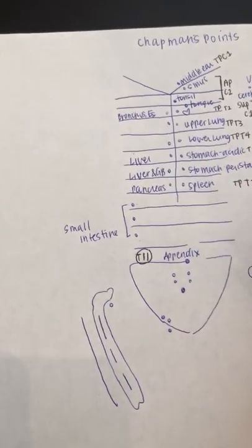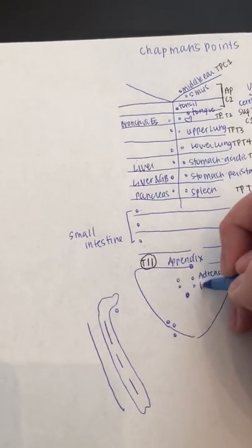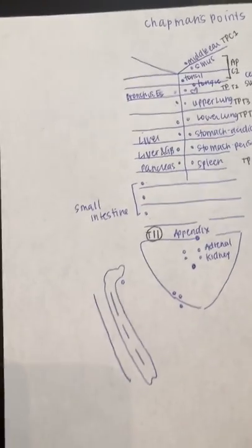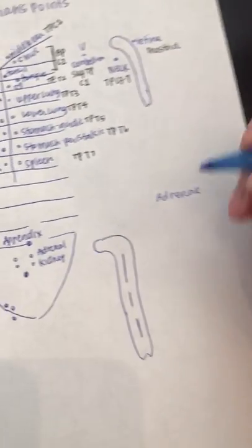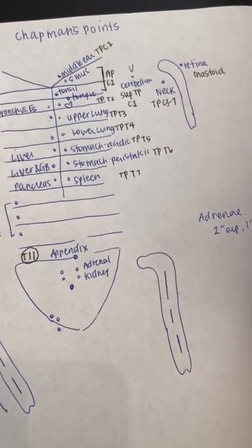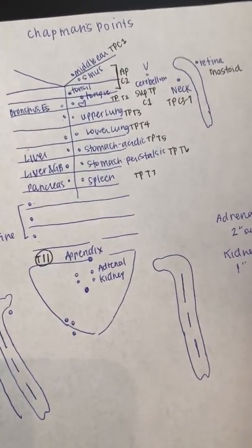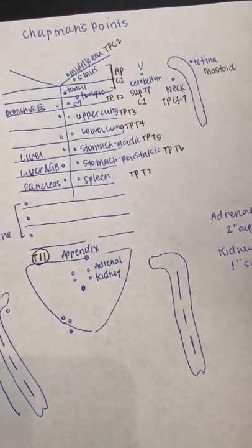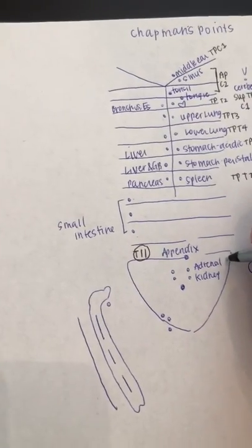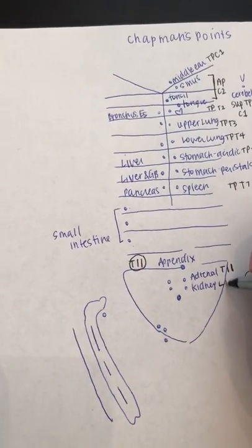So then we're moving down into our abdomen here. So we've got adrenal and kidney, which makes sense since the adrenal glands sit on top of the kidney. And you just have to keep it straight the words. So the adrenal gland is two inches superior, one inch lateral to your belly button. And the kidney is just one and one. But it does make sense that since the adrenal sit on top of the kidney, they would be higher. For the adrenals, it's T11 again. For the kidney, it's L1.